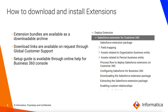Extensions are available as downloadable archives. Any interested customer can reach out to Global Customer Support, commonly known as GCS, to get the download link. The official documentation on how to install and use extensions is available on the Business 360 console online help and at the Informatica doc portal.